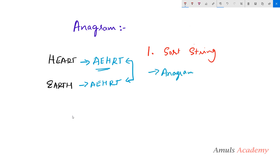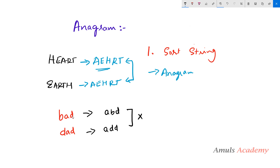If I take 'pad' and 'dad', sorting 'pad' gives a, d, p and sorting 'dad' gives a, d, d — both are not equal, so this is not anagram.